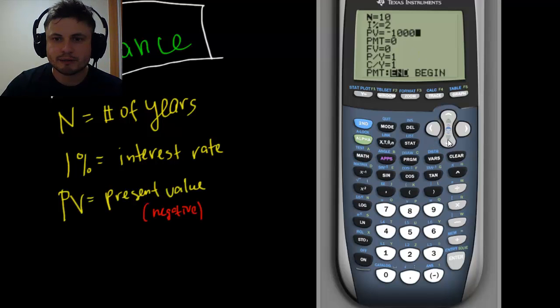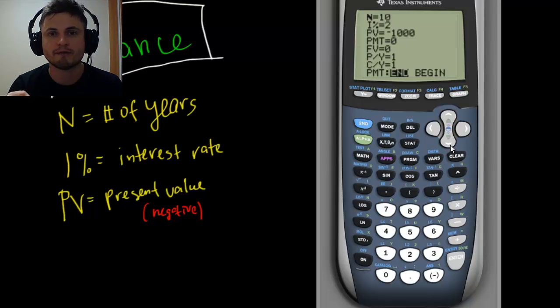The next value PMT represents payment that you want to make each period. This is for more complex situations when you're actually trying to invest money every month on top of your initial investment so that at the end you'll have a lot more money. This is very useful for real life situations when you make some money every month and want to invest a little bit more into your savings account. But for our purposes, we're just going to leave this at zero.